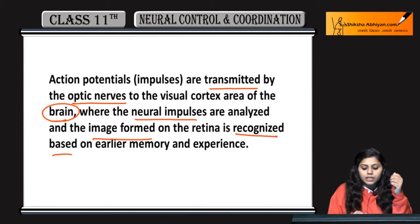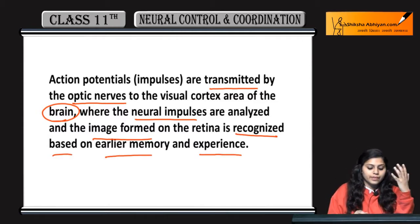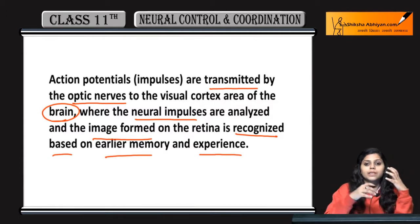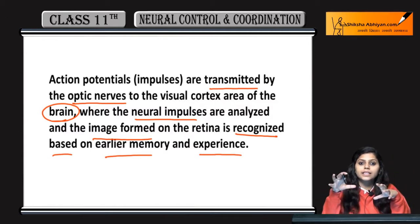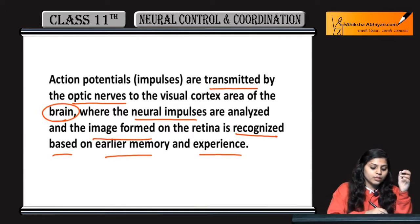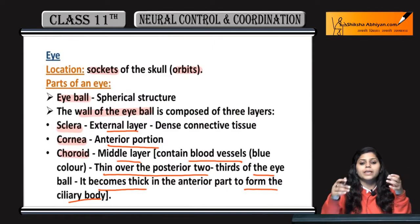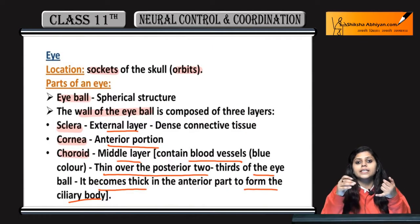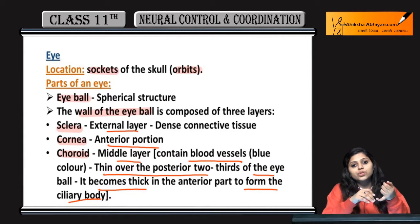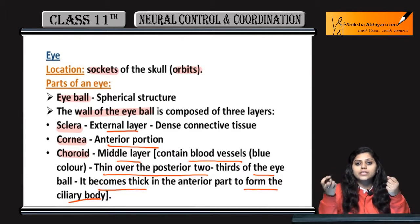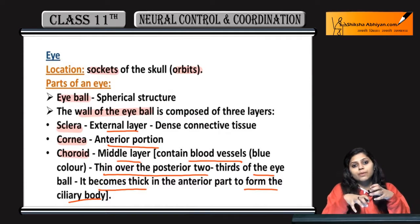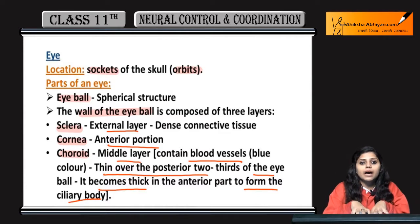Recognition is based on earlier memory and experience. That is the complete mechanism of vision, which occurs with the help of the eye. We studied the different parts of the eye — which visual proteins and cells are present, and because of which cells we are able to see. This topic is called vision.